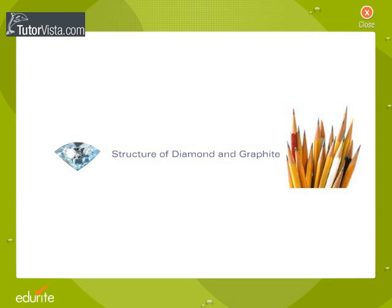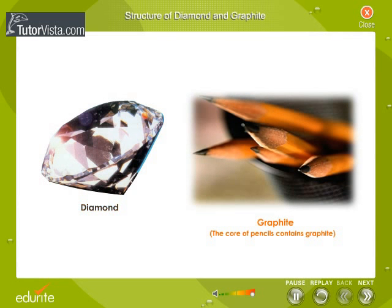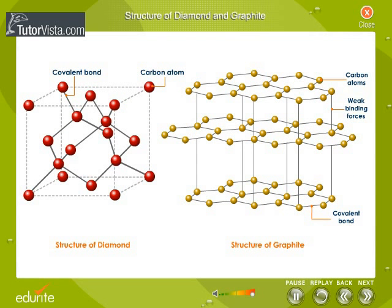Structure of diamond and graphite. Diamond and graphite are allotropic forms of carbon widely differing in their physical appearance, as can be seen here. Diamonds have unmatched brilliance, while graphite is dull and lacks luster. The core of your pencils is made of graphite. Observe the diagrammatic view of the molecular structures of diamond and graphite.